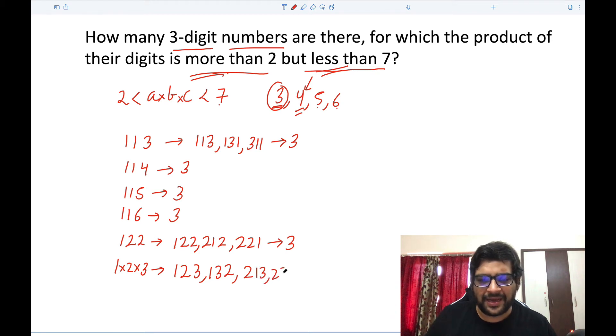Well, three distinct digits on three different positions: 123, 132, 213, 231, 312, 321. This can be rearranged in six ways. As a matter of fact, three digits, three positions, you could have directly done three factorial and gotten six.